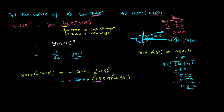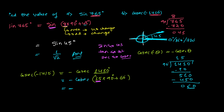Now look at this 15 — the multiple of 90 degrees. If the multiple of 90 is even, there is no change in the trig ratio. If it is odd, there is a change. Specifically: sine changes to cosine, cosine changes to sine; tan changes to cotangent, cotangent to tan; secant changes to cosecant, cosecant changes to secant. Here we have cosecant and 15 is an odd number, so cosecant will change into secant, giving minus secant of 60 degrees.